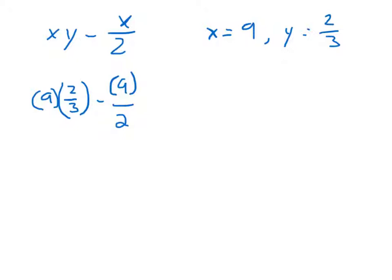Alright. In this case here, we follow the order of operations. And we're going to have to multiply and divide. So, I'll be multiplying these two and dividing those two there. 9 times 2 thirds. 2 thirds of 9 is 6.